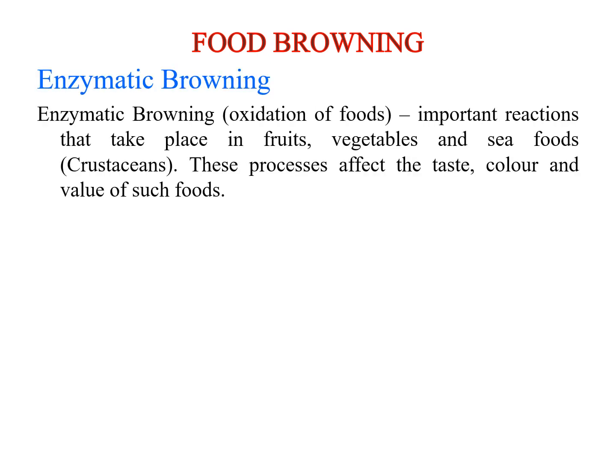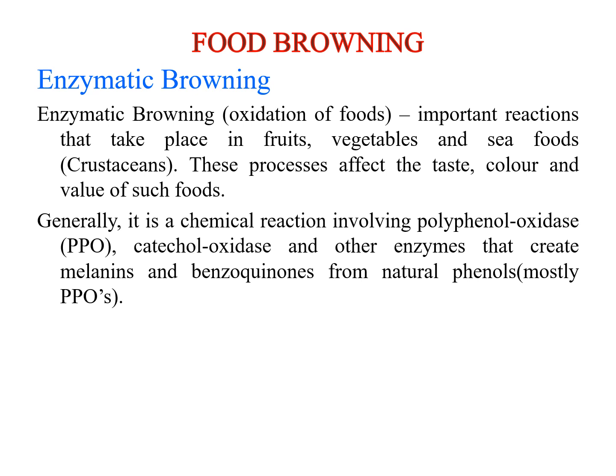In enzymatic browning, the brown color is produced due to the presence of enzymes in the food products. The food products in this category are mostly called perishable foods — foods with high moisture content that spoil easily. Examples include fruits, vegetables, and seafoods, which undergo enzymatic browning because they contain enzymes responsible for inducing brown color. This process affects the taste, color, and value of such foods.